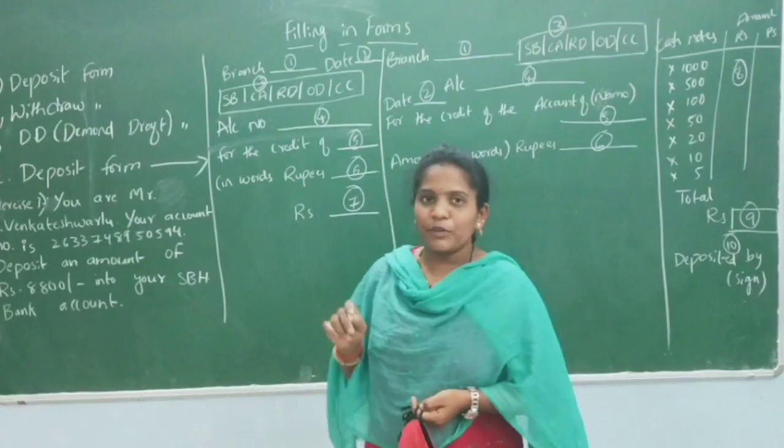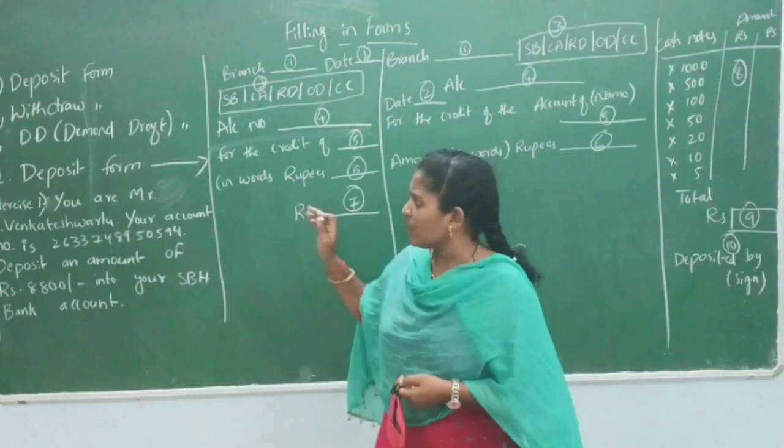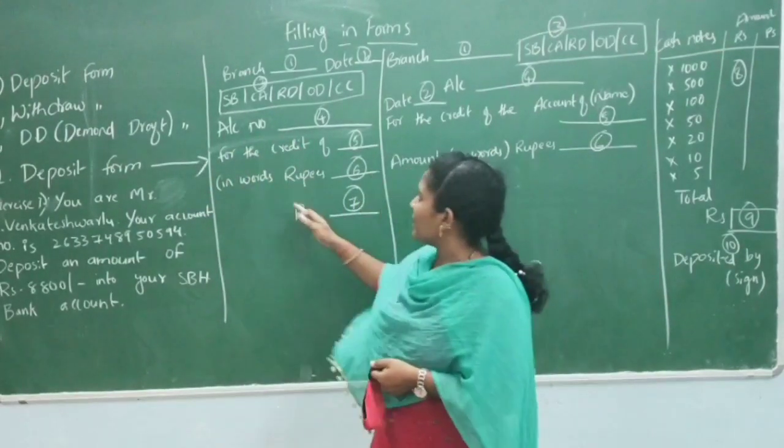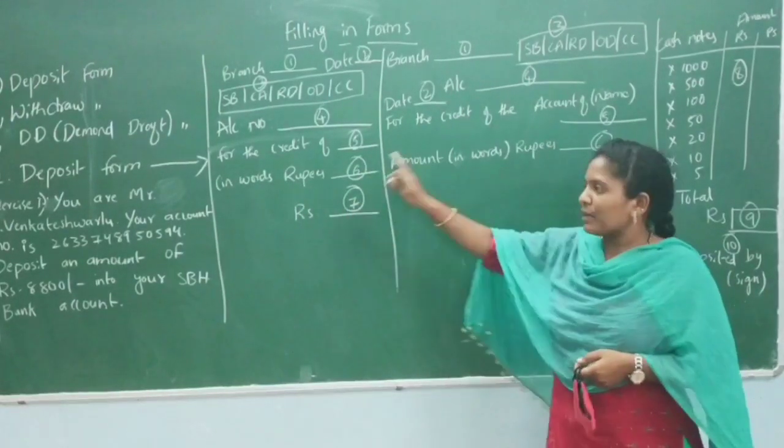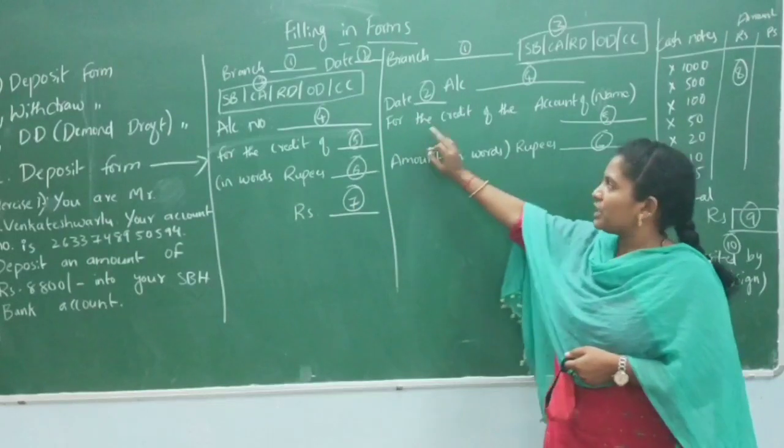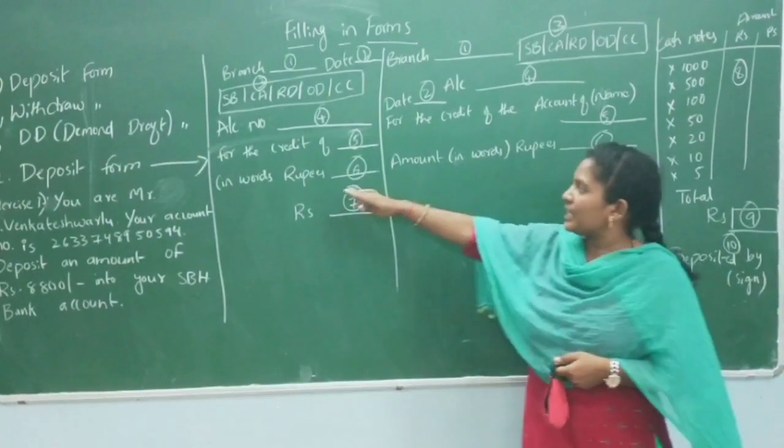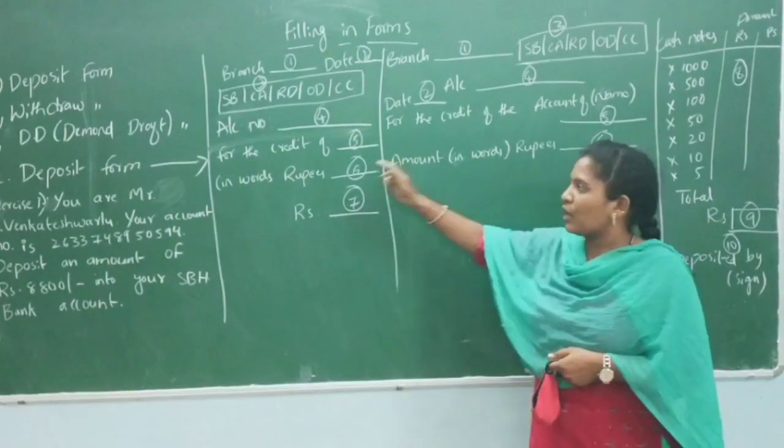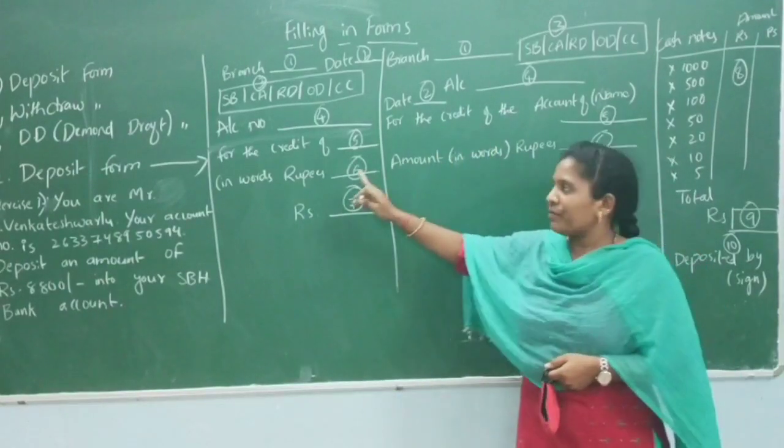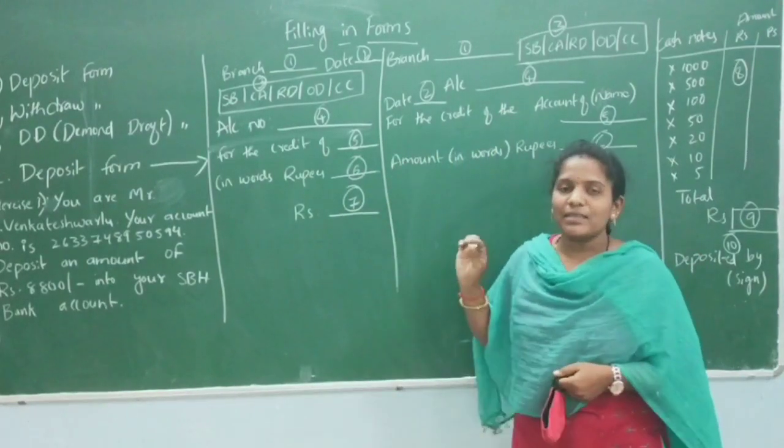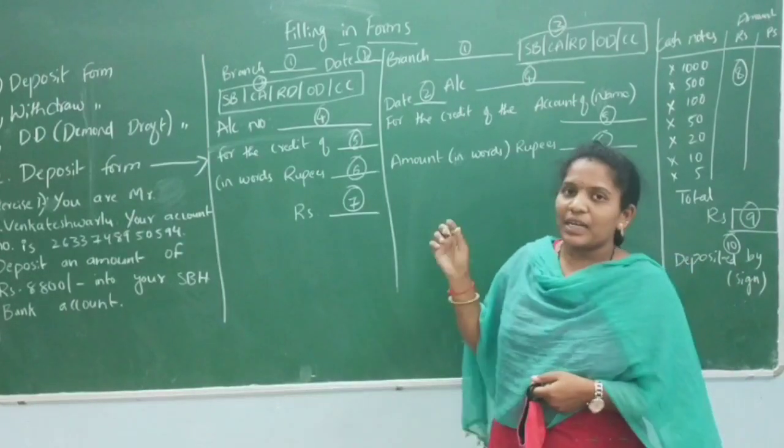When you want to fill the deposit form, you need to write the account number and the account holder's information. You need to write the account number in the form. This is the account number that you will be asked for.